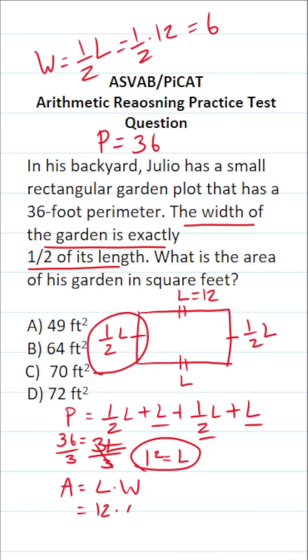All right, so this becomes 12 times 6. And if you can't do that mentally, you can always do it off to the side. 12 times 6: 2 times 6 is 12, carry 1, 6 times 1 is 6, plus 1 is 7.